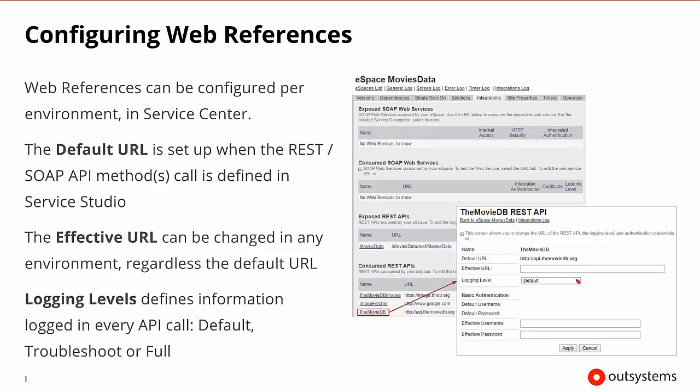We can also change the logging level for what is happening and how well this particular REST API is being called. The choices inside of our logging levels are going to be default, troubleshooting, or full logging.